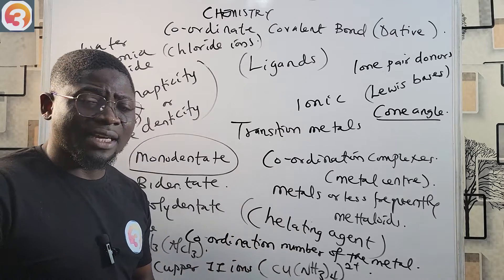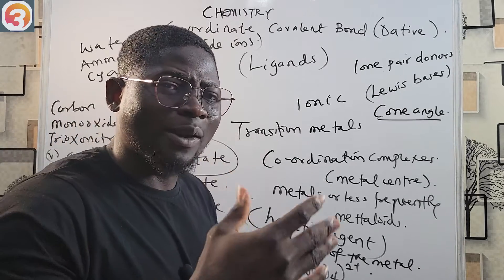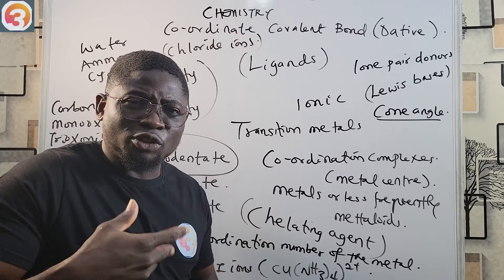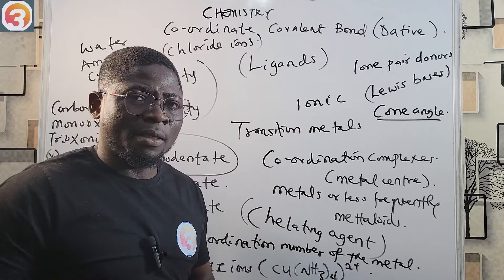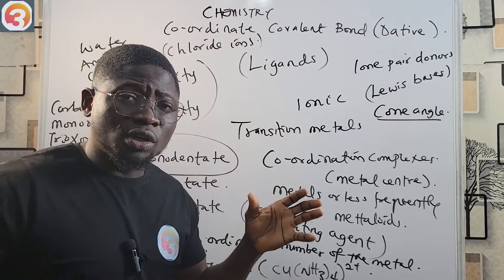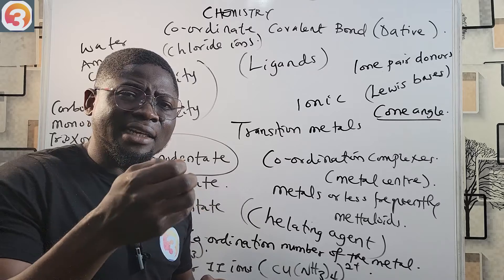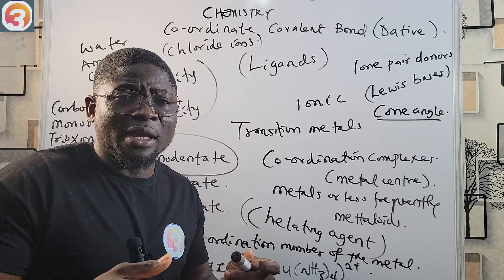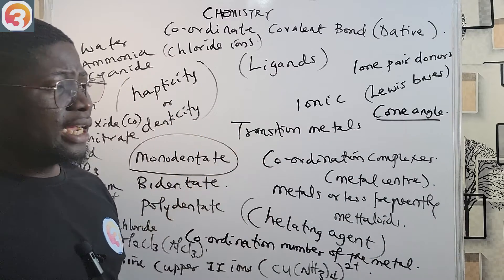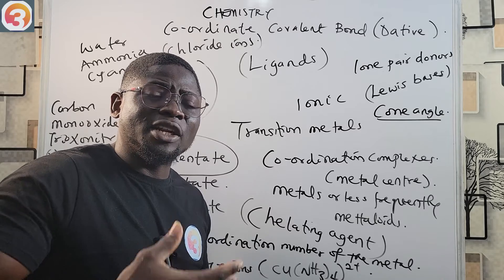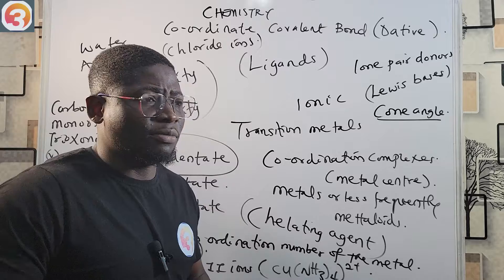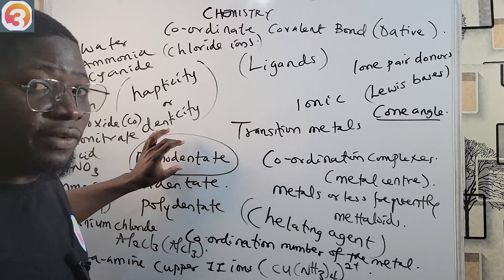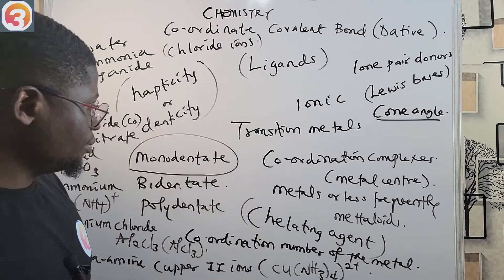In summary, in coordinate covalent bond the shared pair of electrons is donated by only one of the two atoms sharing it, and it resembles ionic or electrovalent bond formation because one atom contributes the shared pair. Transition metals are good candidates for dative bond formation. Species that have a lone pair of electrons and can form coordination complexes with metals are known as ligands. Depending on the number of electrons a ligand can contribute to a metal, it may be called monodentate, bidentate, or polydentate — with the exception of monodentate, ligands are called chelating agents.